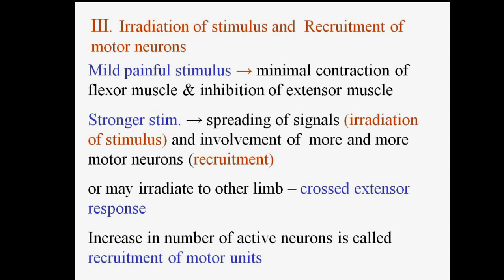Stronger stimuli cause spreading of signals and involvement of more and more motor neurons, which is known as recruitment. The spreading of the signal is known as irradiation of the stimulus. It may also irradiate to the other limb, which is known as the cross extensor response. The increase in number of active neurons is known as recruitment of motor units.